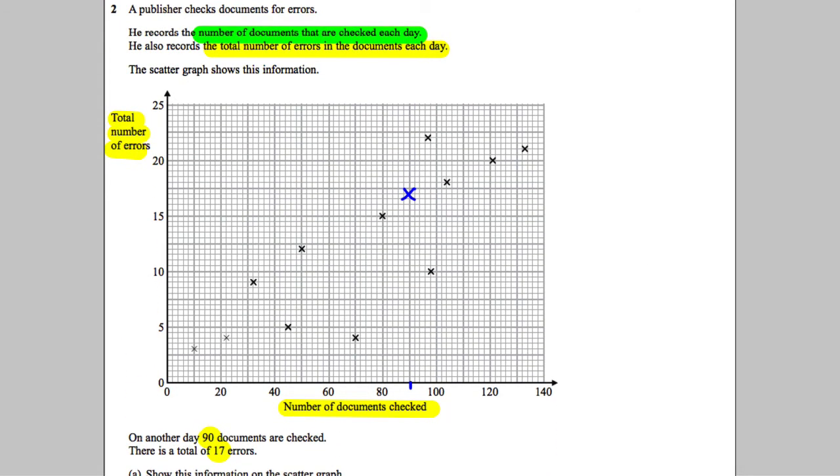Remember the three types of correlation. If they are going up as they go from left to right, then you call that a positive correlation.